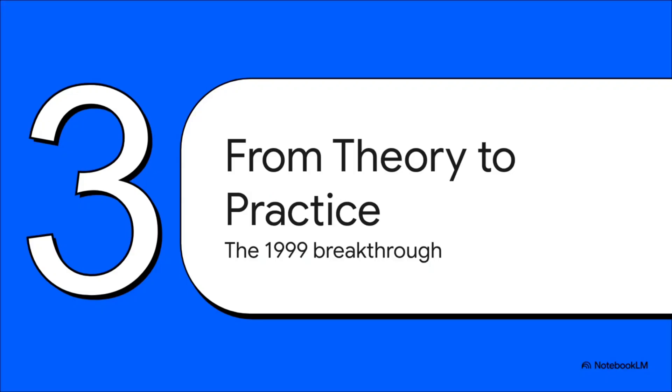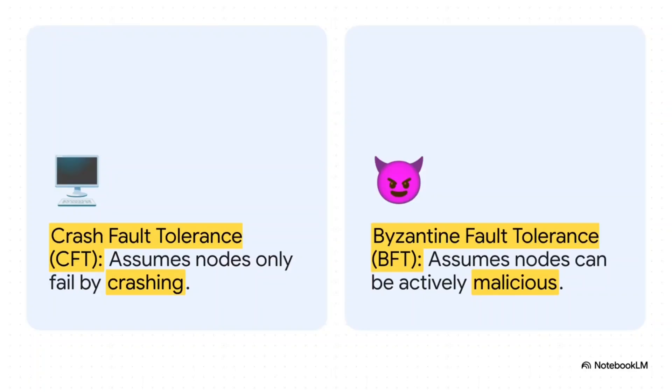For almost 20 years, this problem was mostly just a thought experiment. It was theoretical. Early solutions were cool, but they only worked under perfect lab conditions, not on messy, unpredictable networks like the internet. But then in 1999, two researchers—Miguel Castro and Barbara Liskov—finally cracked the code and figured out how to make it work in the real world. Their solution had to be way more robust than anything that existed before.